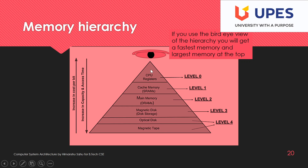Data can be transferred from magnetic tape to optical disc, optical disc to magnetic disc, to main memory, cache memory, and CPU registers. These are different levels of hierarchy. Normally we work up to level three only: CPU, cache, main memory, and magnetic disc.